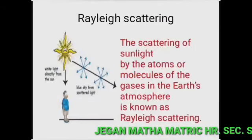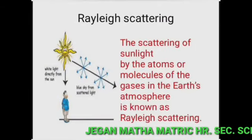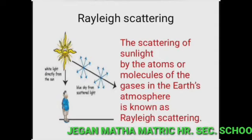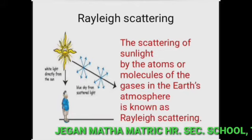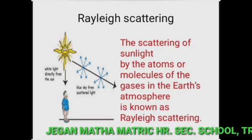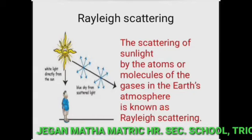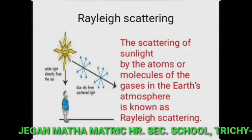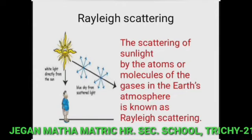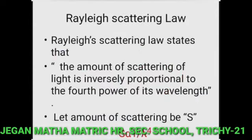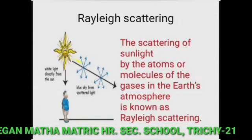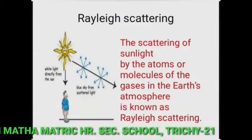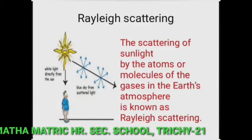The first type is Rayleigh scattering. The scattering of sunlight by the atoms or molecules of the gases in the earth's atmosphere is known as Rayleigh scattering. When a light ray coming from the sun enters the atmosphere, it is scattered in all directions by these atoms or molecules.